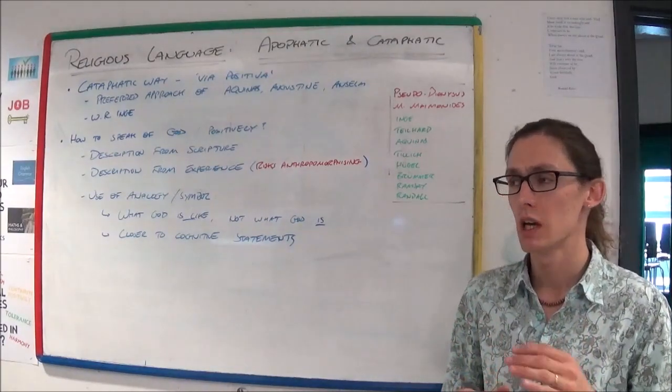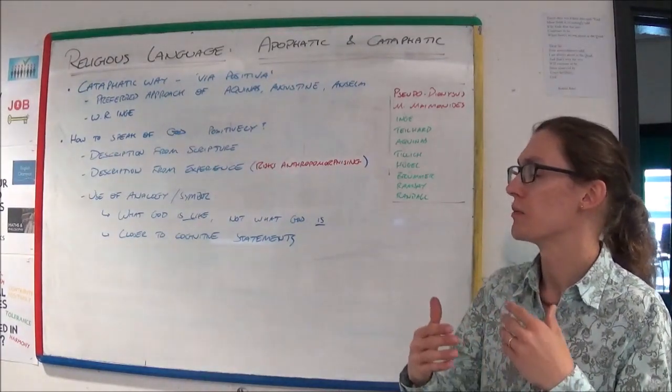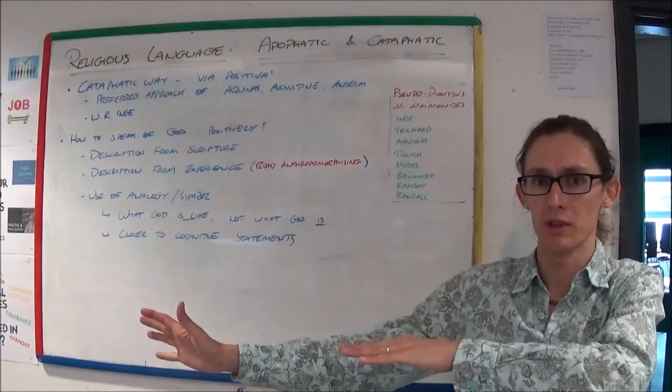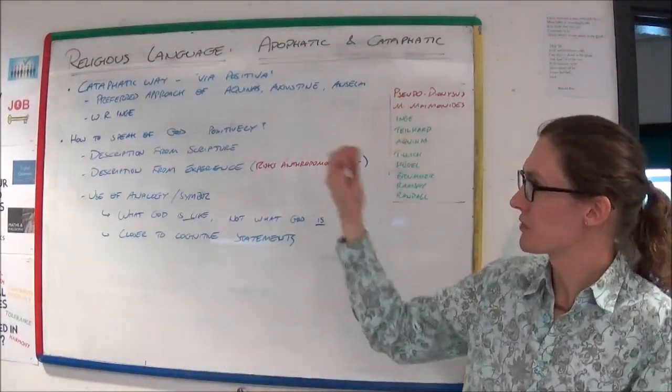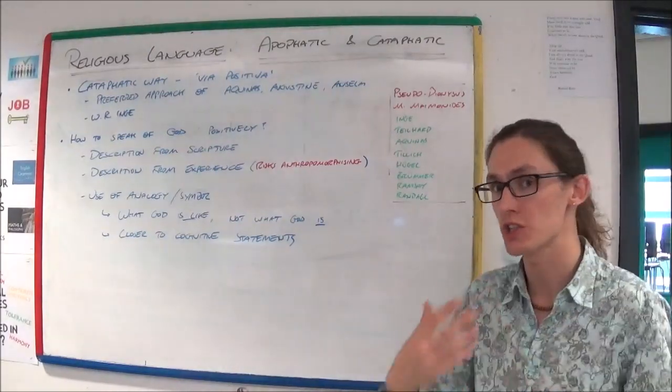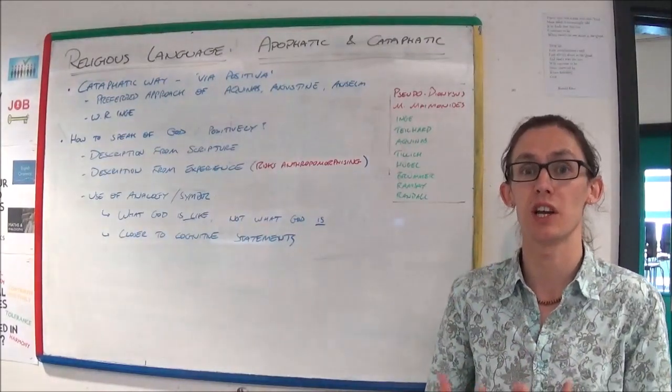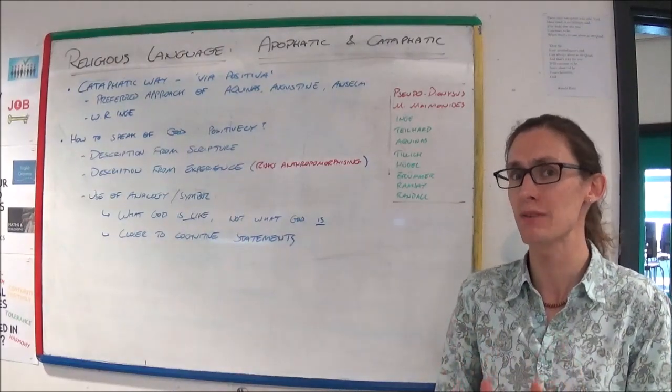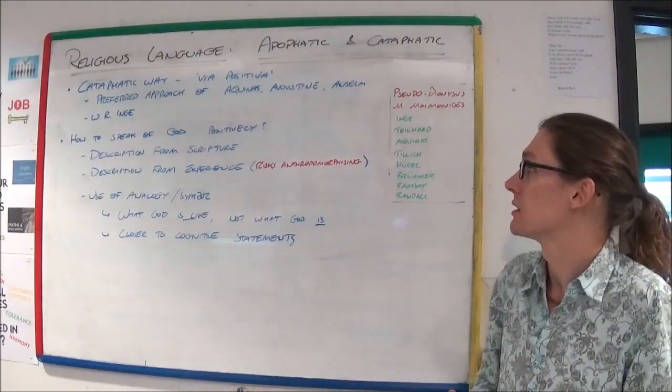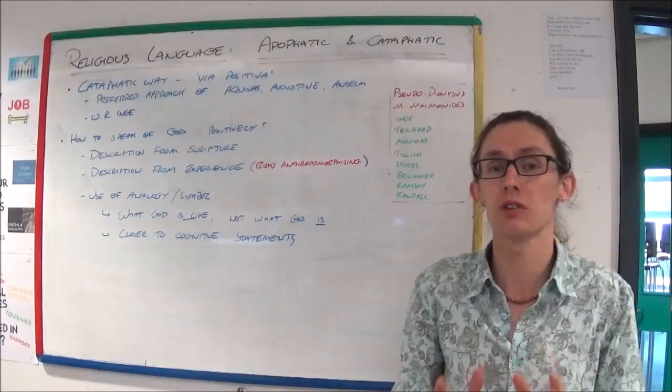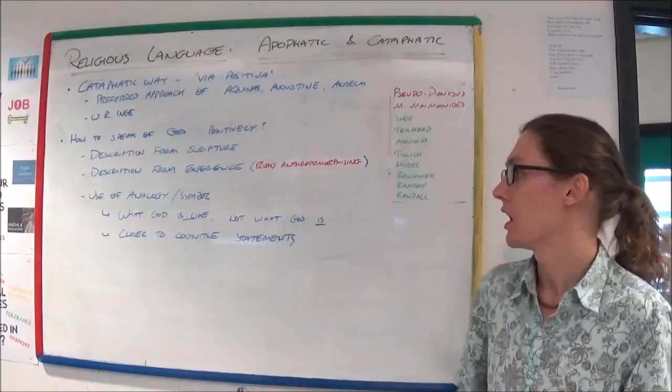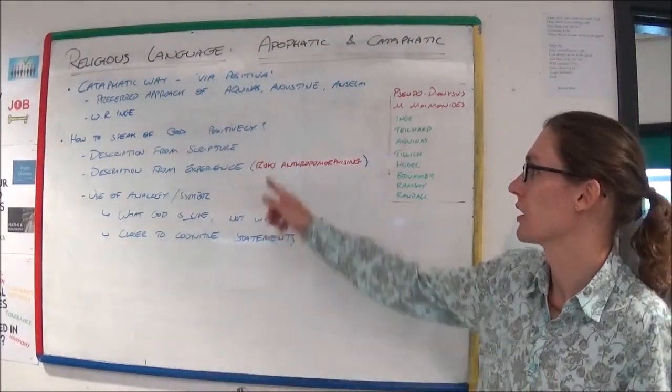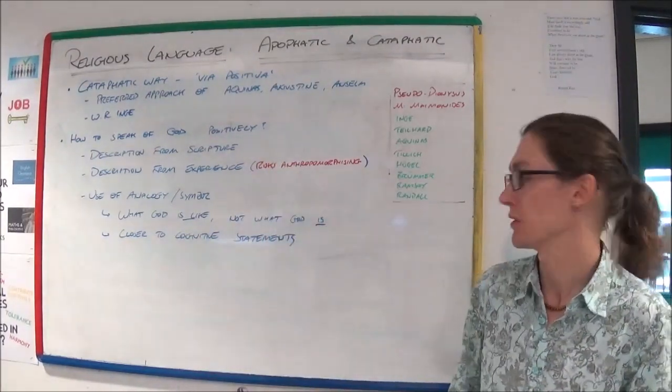Now, analogy and symbol are a stage on from the specific cataphatic way. It's not just saying positive things about God. It's a different way of saying positive things about God. But they still count as being cataphatic. Although, they are, as I say, a stage on from descriptions from the scripture or from experience.